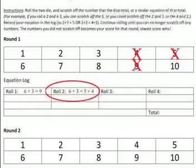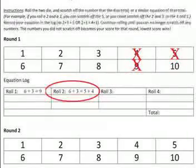So let's say on my second roll, I also roll 6 plus 3. In my log on roll 2, I would record 6 plus 3 equals, but I can't choose 9 — 9's already taken. So I'd have to find another solution that makes this equation true. I can choose 6 plus 3 equals 5 plus 4 and then cross out the 5 plus 4.